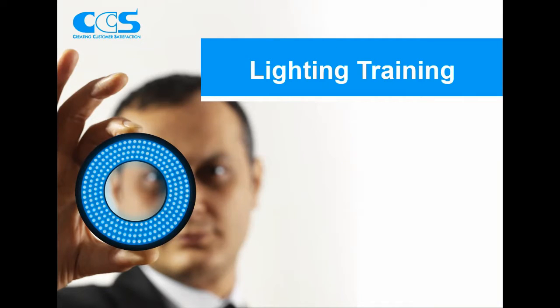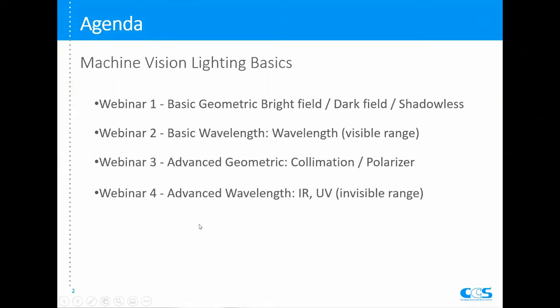Hello everybody, this is Leo from CCS America. Thank you very much for joining this webinar. This is a webinar series where we're going to go over the lighting techniques in machine vision. There are four webinars in total in this series, and we're going to cover basic geometric, basic wavelength, advanced geometric, and advanced wavelength techniques in machine vision. After this webinar series, we will be able to select a proper light for machine vision applications.